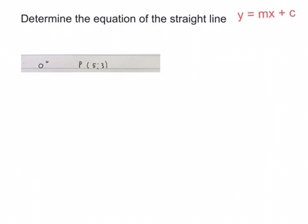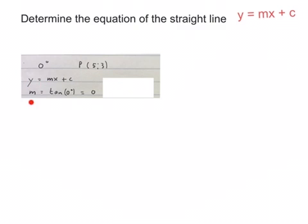For the next two, you must please keep your wits about you. They told us the inclination is 0 degrees and the point on the line is (5,3). We know the formula is y equals mx plus c. We know the formula is m equals tan θ. We put the 0 degrees in there and the calculator will give us the answer 0.